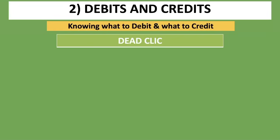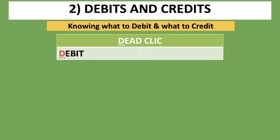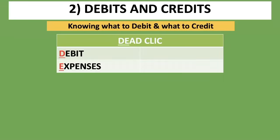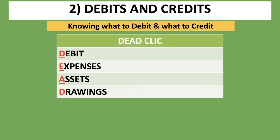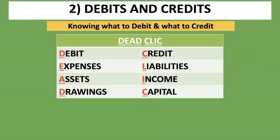What do these letters stand for? DEAD: the D stands for Debit. What do we debit? We debit Expenses (E), Assets (A), and Drawings (D). Whenever you have an expense, an asset, or drawings, they go on the debit side. CLIC: the C stands for Credit. What do we credit? We credit Liabilities (L), Income (I), and Capital (C). We looked at all these items in part one.